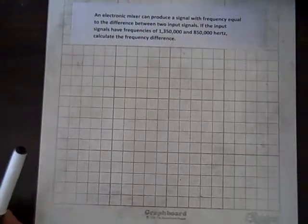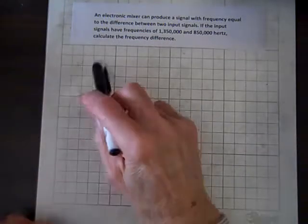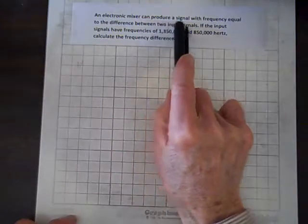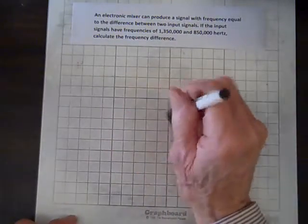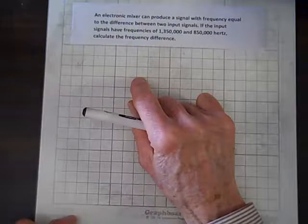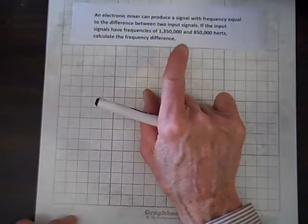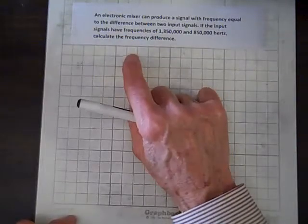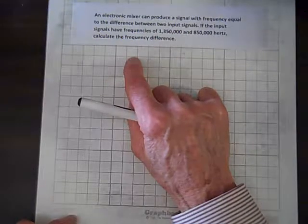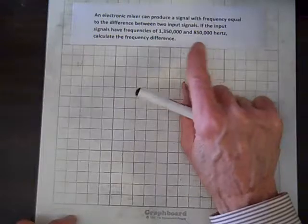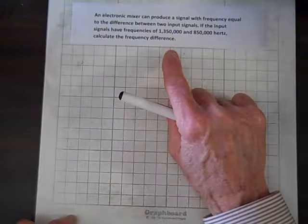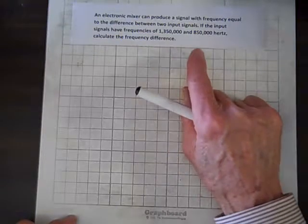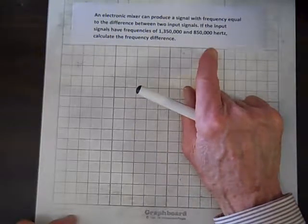Well, here we have a subtraction problem, so let's read it. An electronic mixer can produce a signal with frequency equal to the difference between two input signals. Now listen, the reason you know it's subtraction is because they use the word difference. If the input signals have frequencies of 1,350,000 and 850,000 Hertz, calculate the frequency differences.